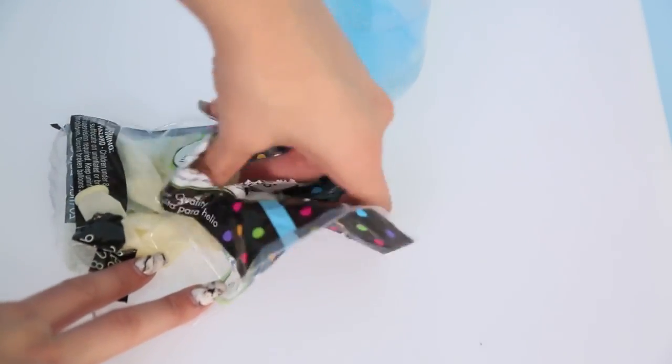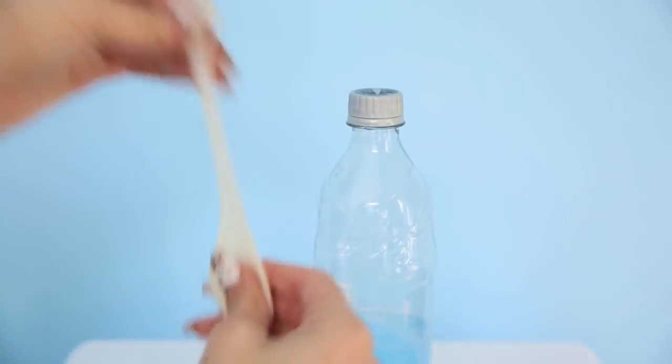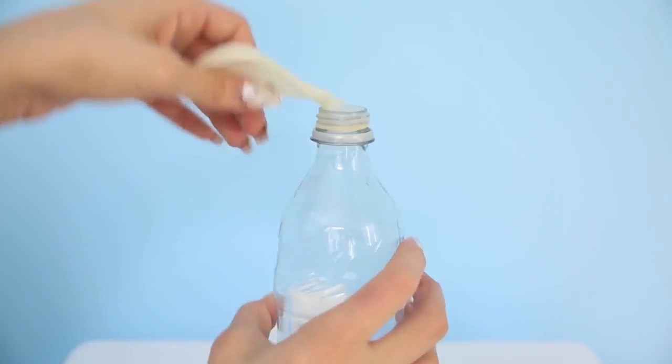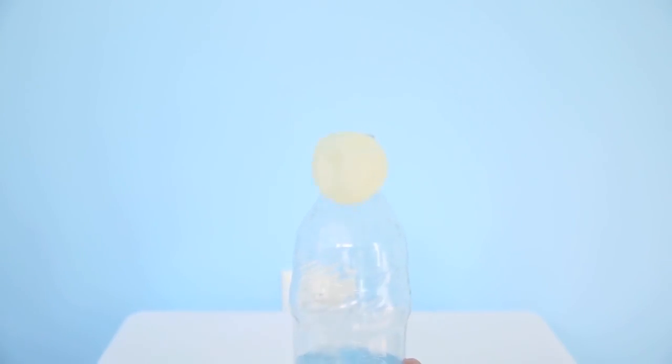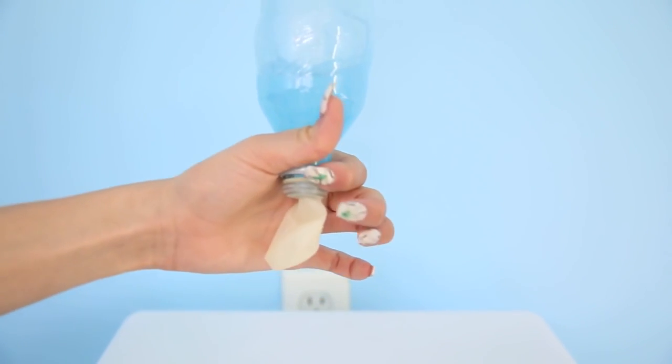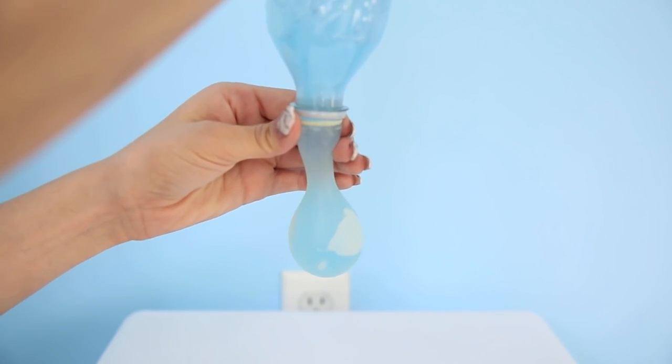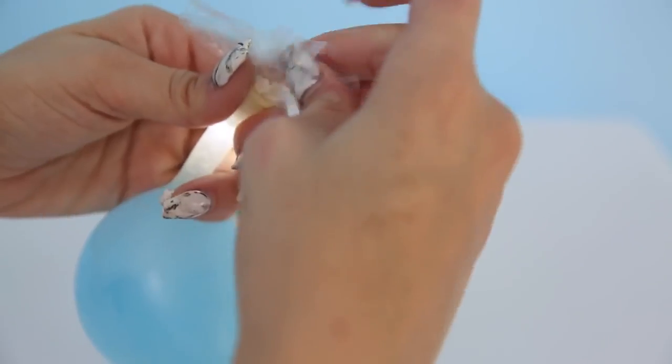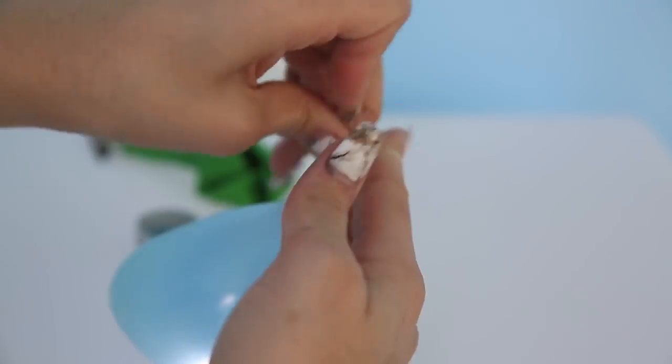And take a clear balloon. Stick it to the top of the water bottle. Now put the slime into the balloon. And take an LED light and slip it into the balloon and tie it up.